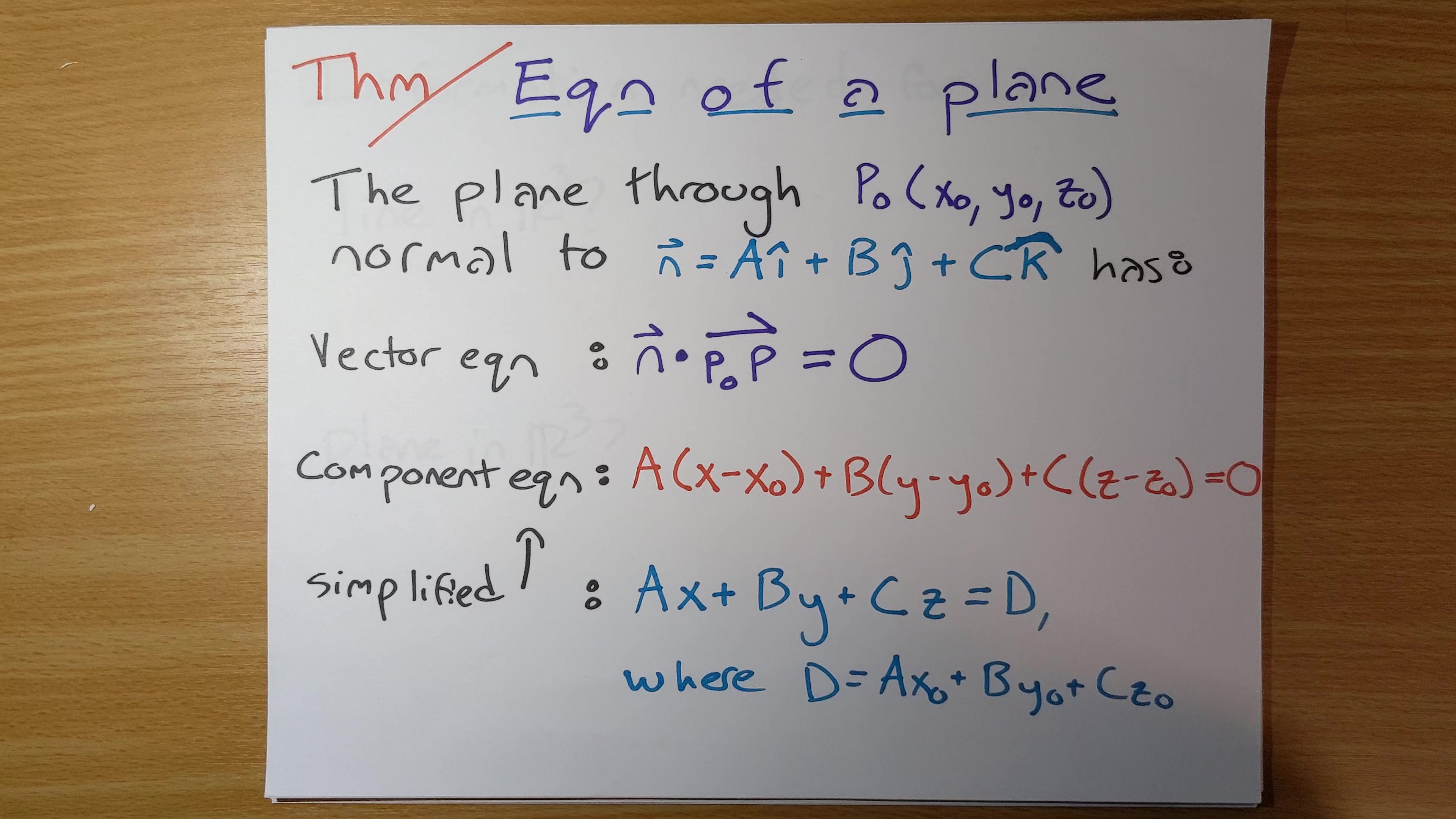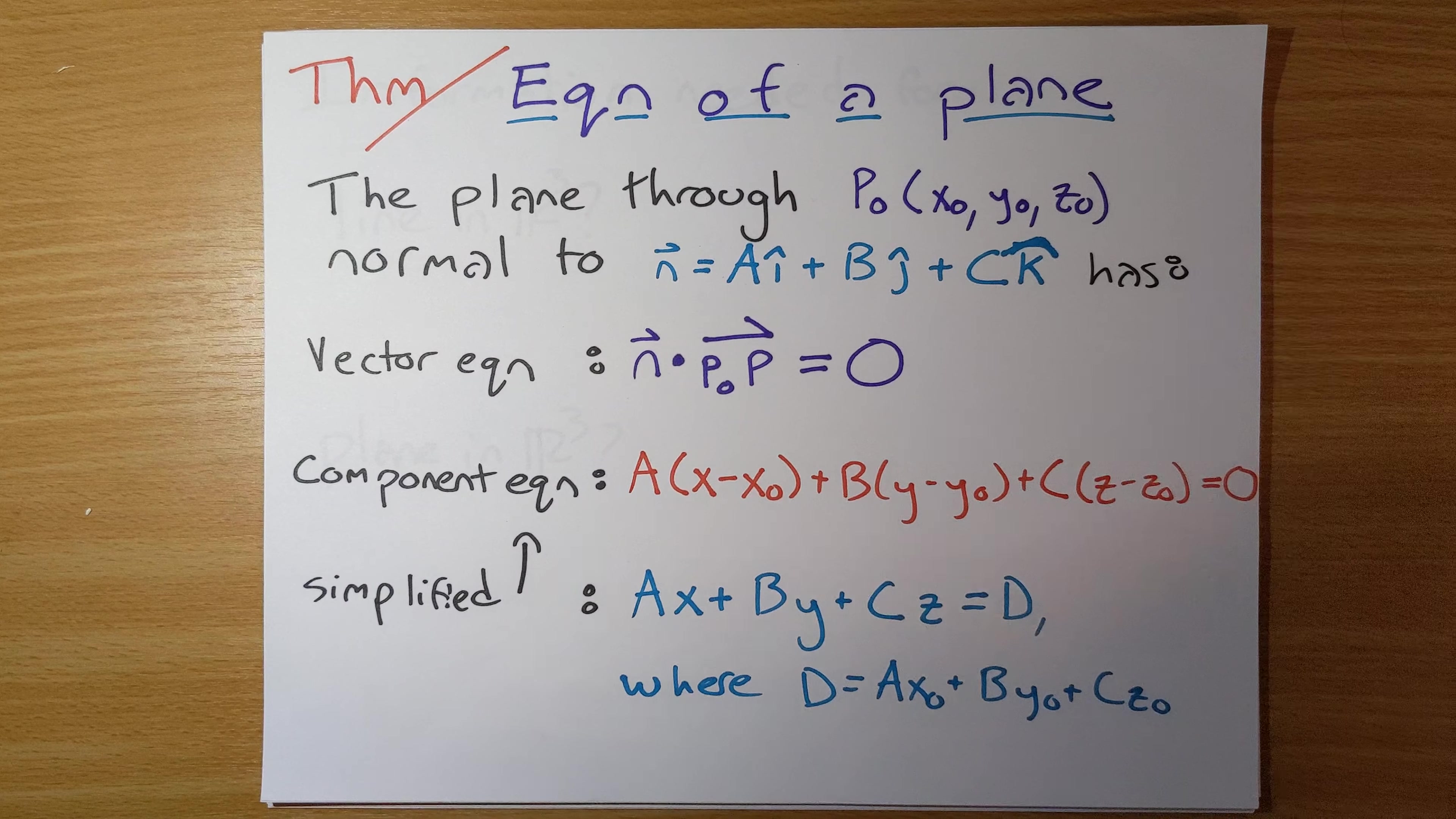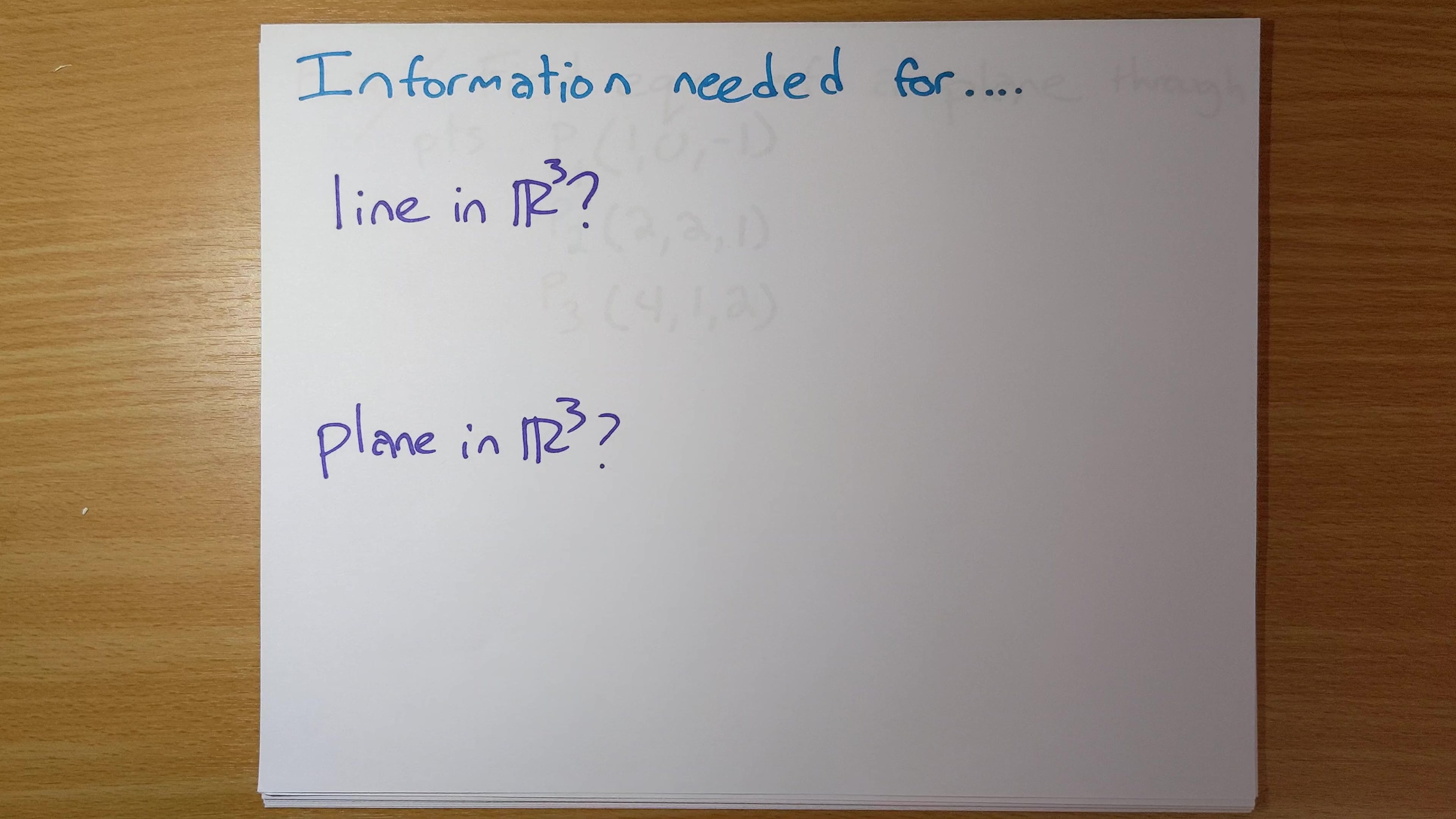In the last video, we introduced this theorem and did a simple example with it. Let's talk about this theorem a little bit more in depth and then do a more complicated calculation using it. So, the thing I want us to think about, what information do we need for a line in R3 and what information do we need for a plane in R3?